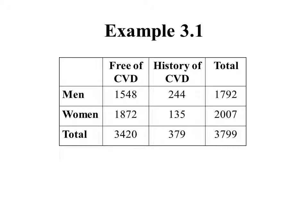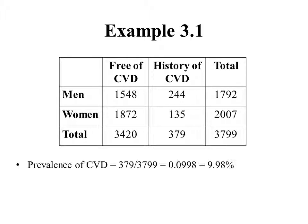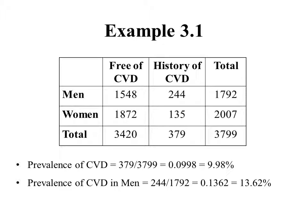Let's calculate different prevalences of cardiovascular disease. First, the overall prevalence: we take the total number of people who had a history of cardiovascular disease, which is 379, and divide by the overall total number of people, 3,799. We get just under 10% — so about 10% of people in this survey had a history of cardiovascular disease.